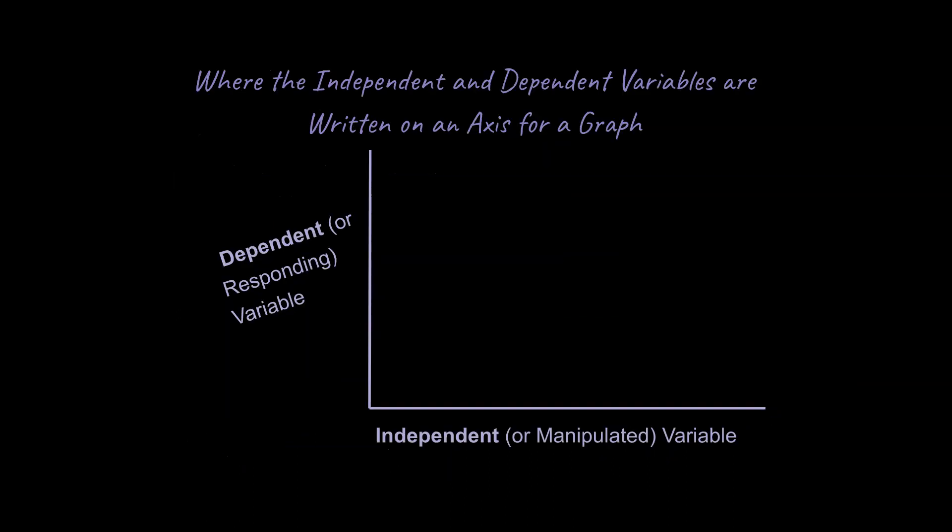All right, and so let's take a look at how to put this on a graph. You're going to always, always, always want to put the independent variable, or sometimes called manipulated variable, on the x-axis. And the dependent variable is always going to be on the y-axis here.